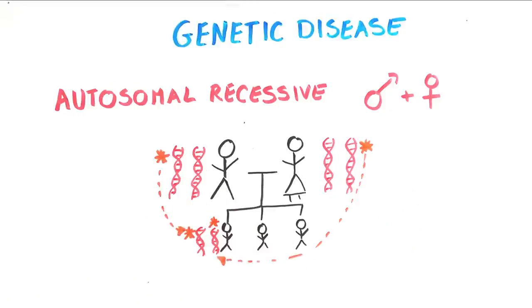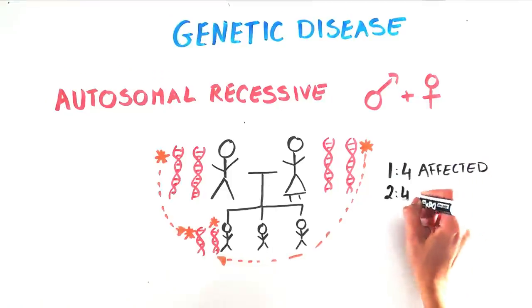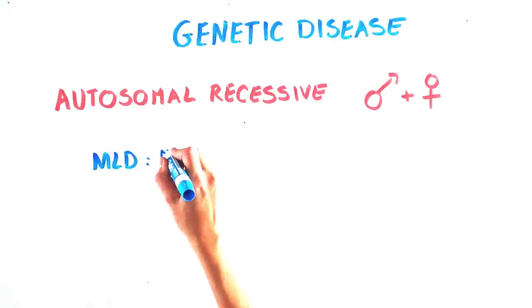Since each carrier parent has one good and one bad copy of the gene, each child has a 1 in 4 chance of being affected, with a 2 in 4 chance of being a carrier. One devastating autosomal recessive disease is MLD,